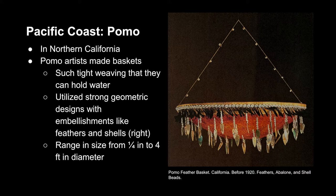Located in Northern California, the Pomo people are known for their beautiful baskets. While some of these baskets are created for aesthetic purposes, the weave is so tight that these forms can actually hold water. Stylistically, they utilize strong geometric designs and embellishments like feathers and shells, which we see in this example. They also ranged in size from just a quarter of an inch to four feet in diameter. And again, as we've seen in previous art forms, this was traditionally passed down to female members of the family.